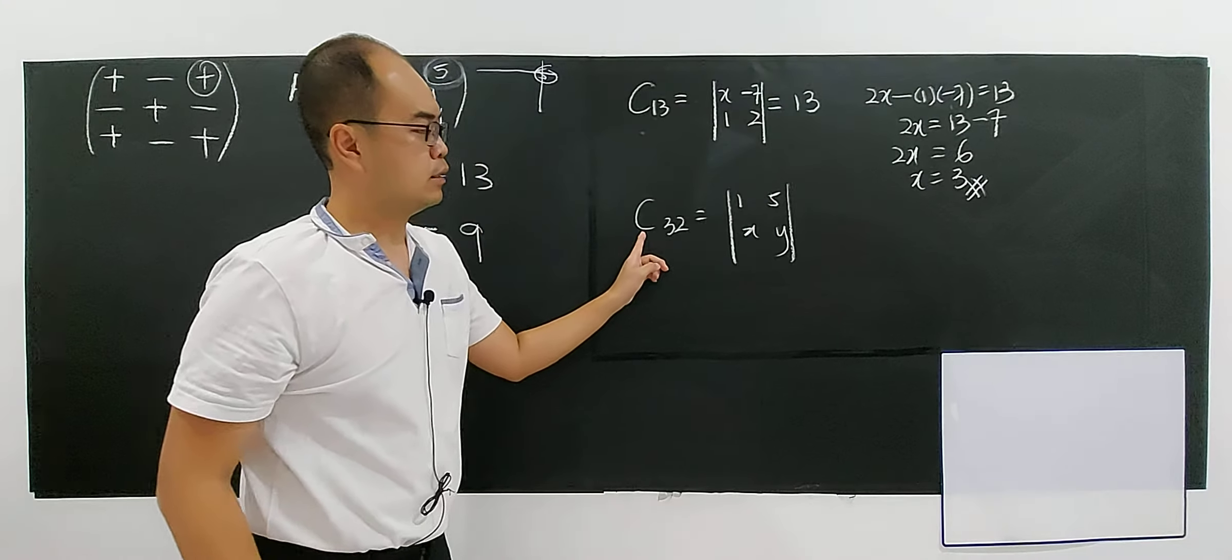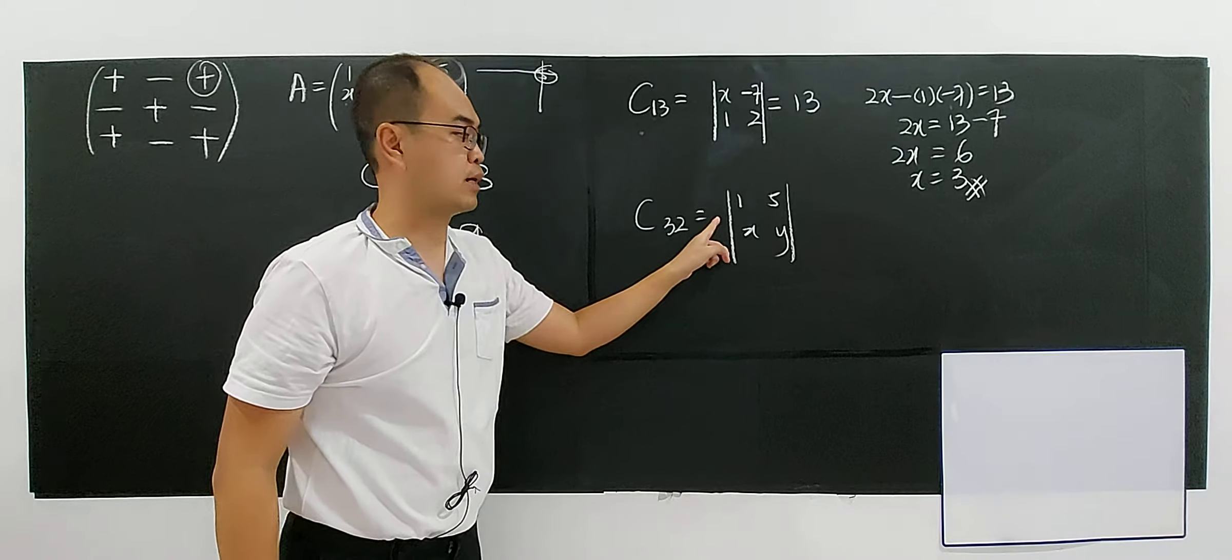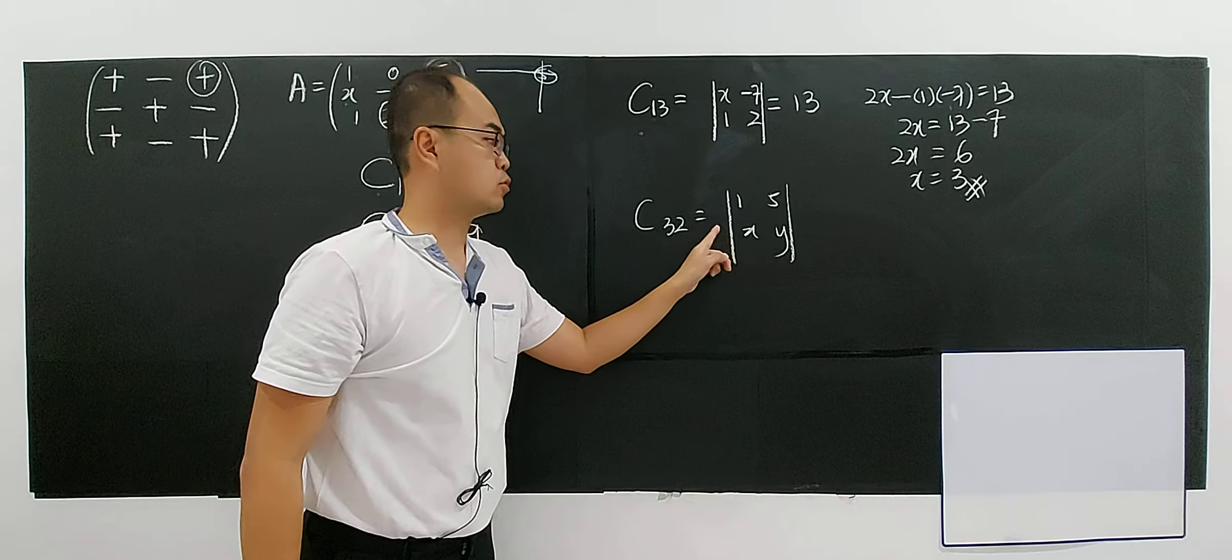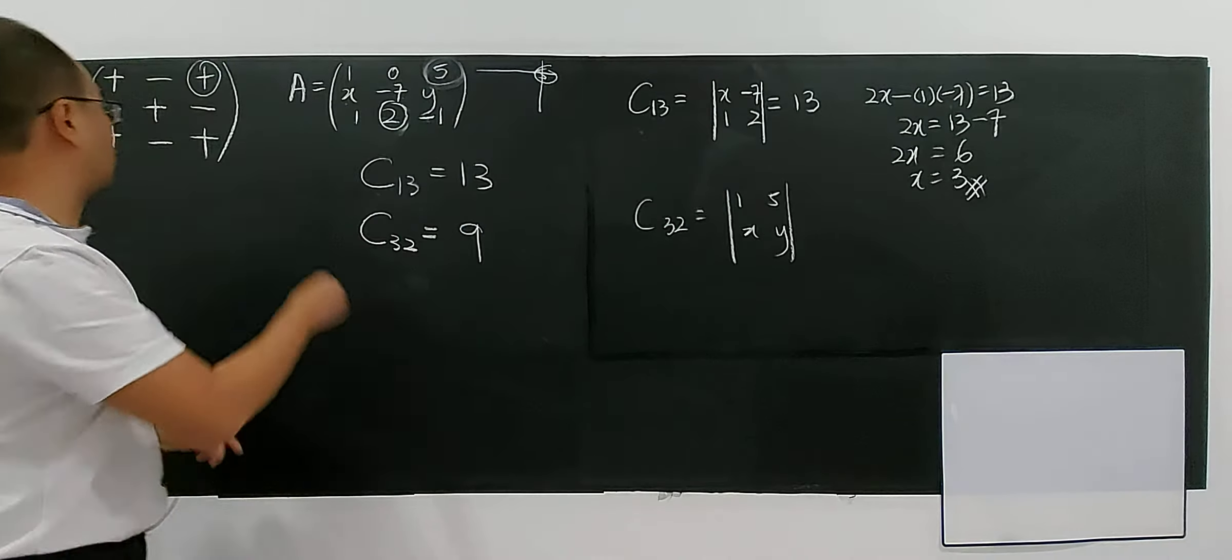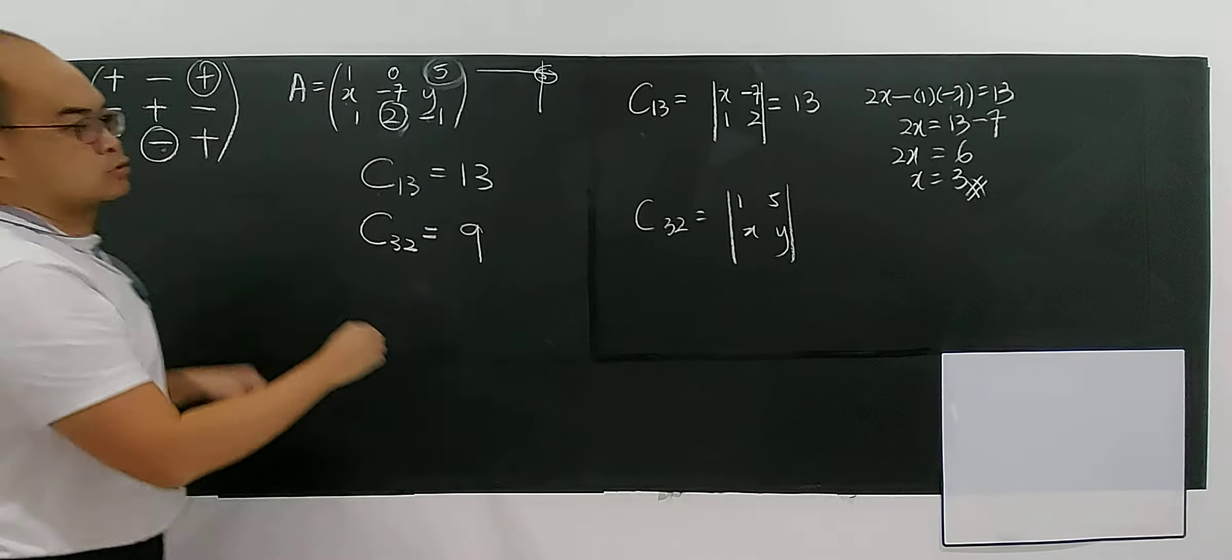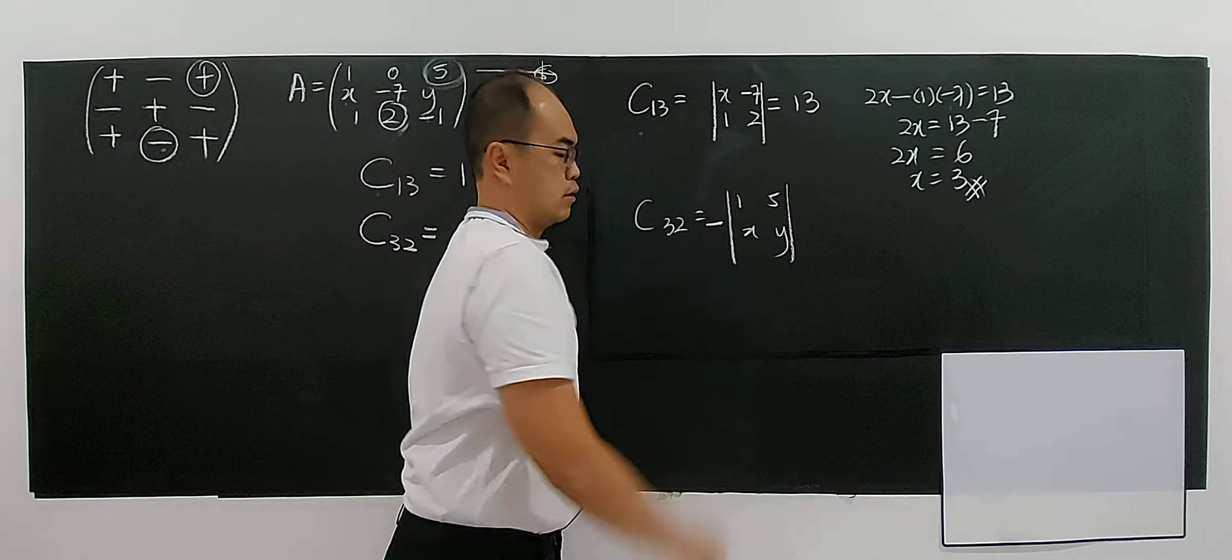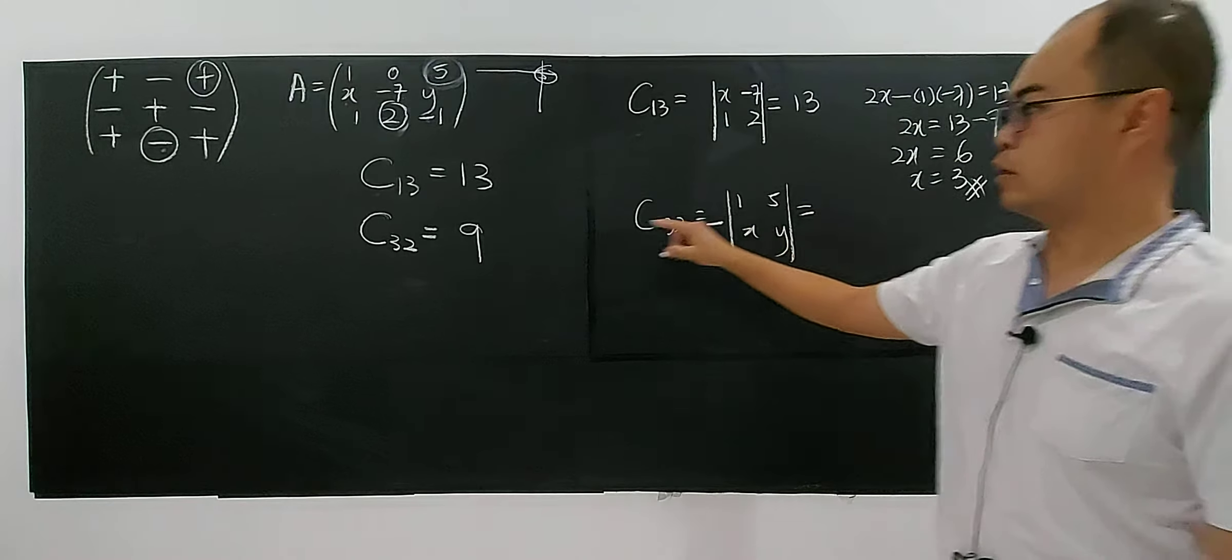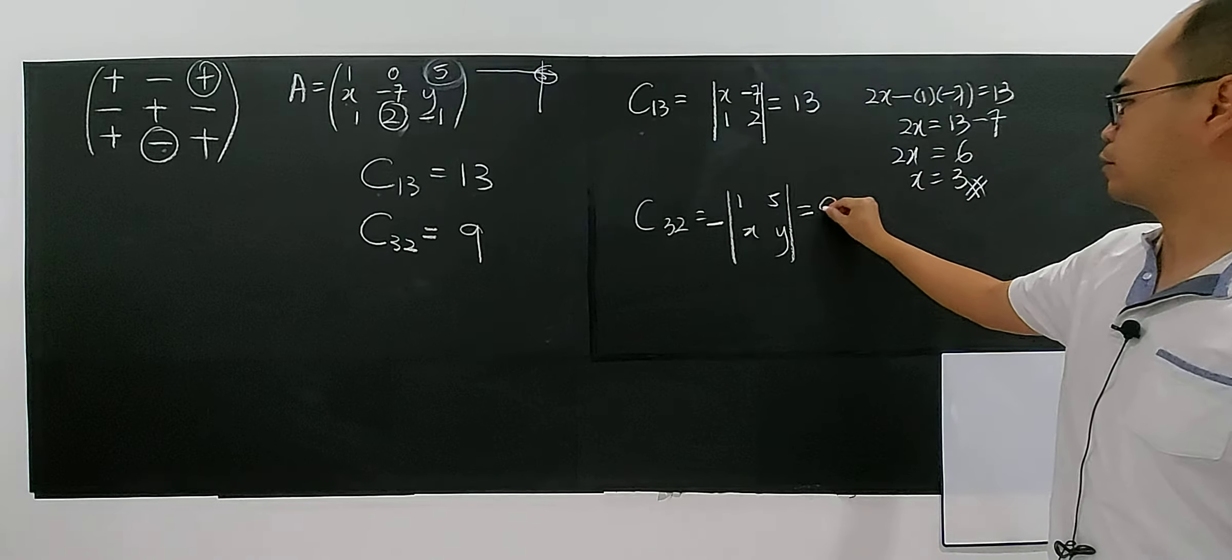And for cofactor, you have a sign here. If this is a minor, the M. So, this is the minor. So, the cofactor, the third row, second column. The third row, second column is negative, right? It's negative. So, you have to put negative in front of this. Which equals to the one given, 9, right? 9.